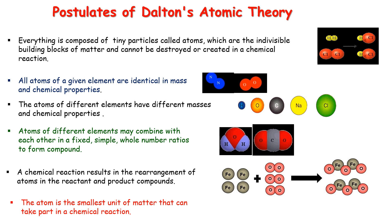The third postulate states that atoms of different elements have different masses and chemical properties — atoms in element A are different from those in element B in terms of mass and chemical properties. The fourth postulate states that atoms of different elements may combine in fixed, simple, whole number ratios to form compounds. For example, water always has two hydrogen atoms and one oxygen atom, and one unit of carbon dioxide has one carbon atom with two oxygen atoms. The atom is the smallest unit of matter that can take part in a chemical reaction.